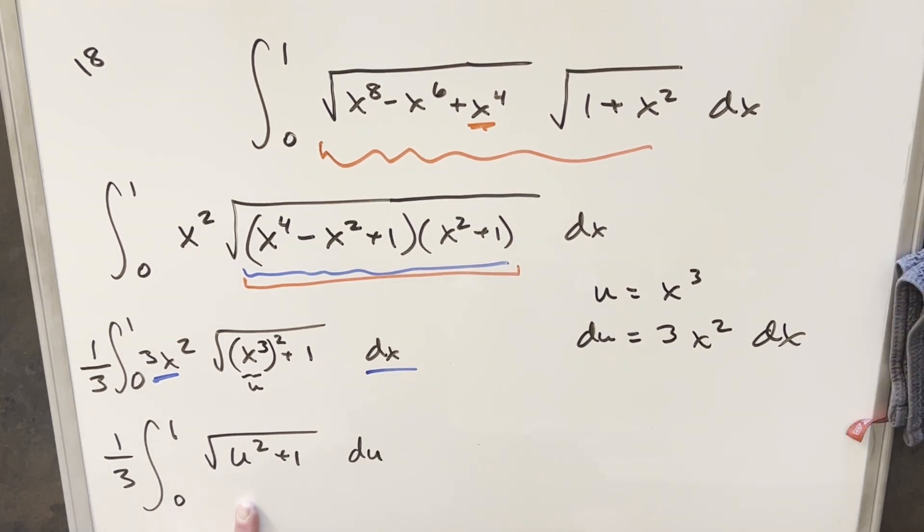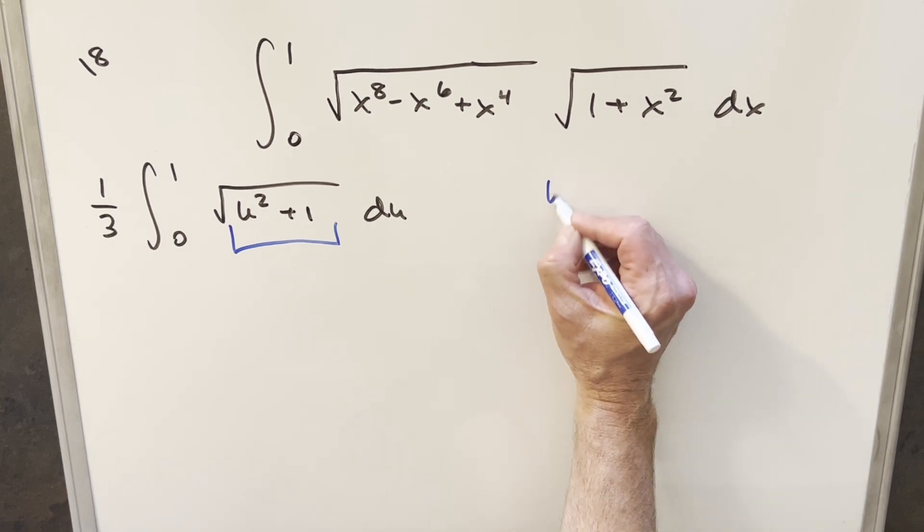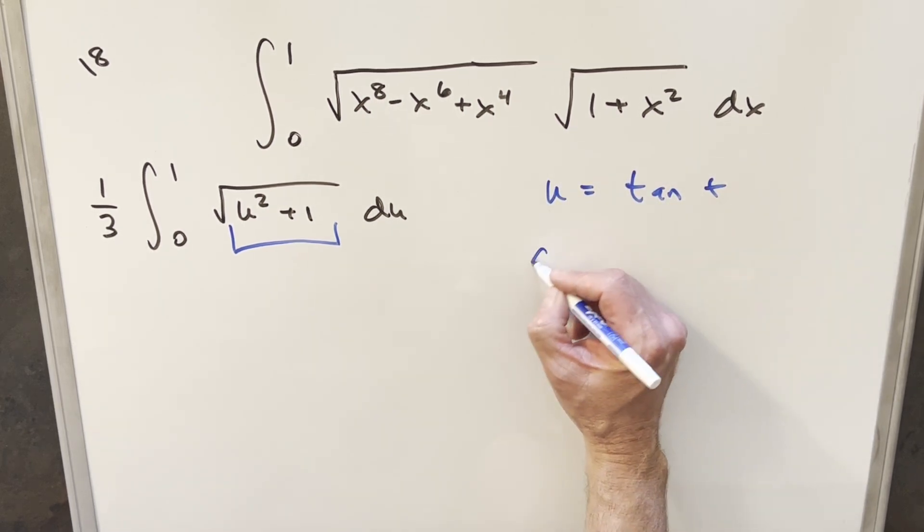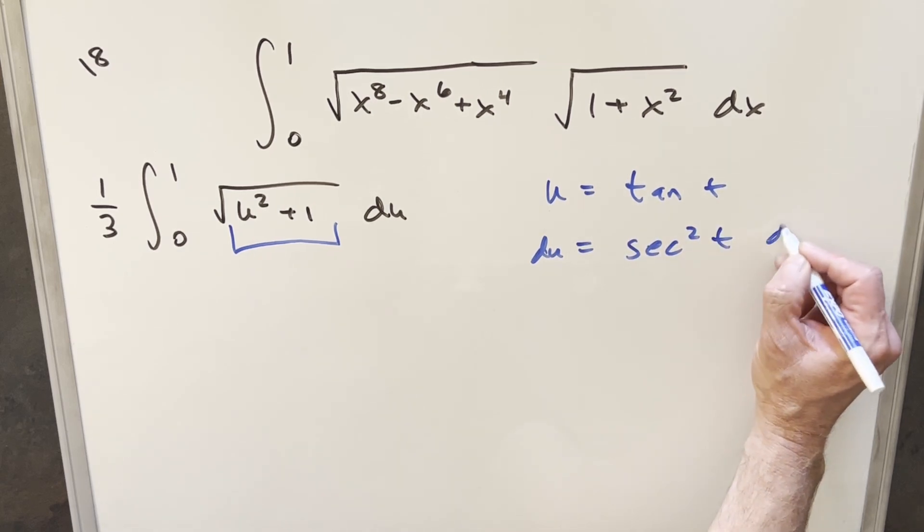But now this integral here, I think we can do this with a trig substitution, but I think I'm just going to need a little more space. Okay, now if what we have here inside the radical is u squared plus 1, I want to do my trig substitution using tangent. So let's just set u equal to tan of t.